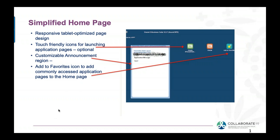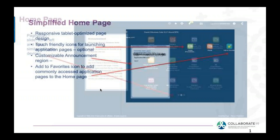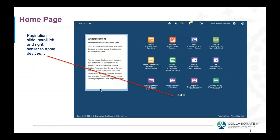We have these touch-friendly icons, all coming through a profile or preference change that can be set individually. You'll have the ability to have these icons on your desktop or tablet for favorites. There is a customizable announcement section — you can see that in the white box. There's also a favorite icon where you can add your favorites to your desktop. Additionally, there's pagination — if you have so many icons on your landing page, you'll have the ability to slide left and right, just as you do with a smartphone scrolling through apps.